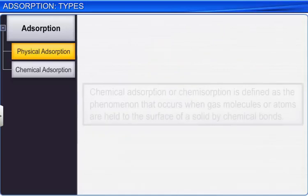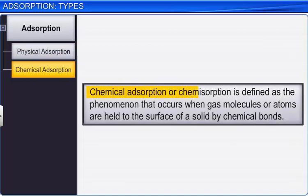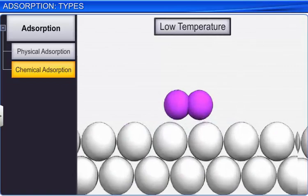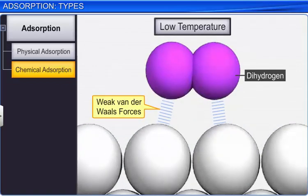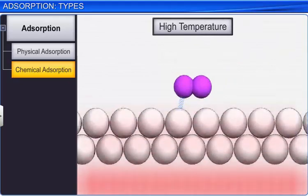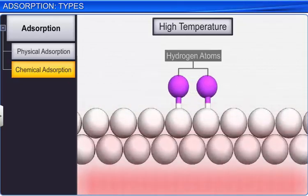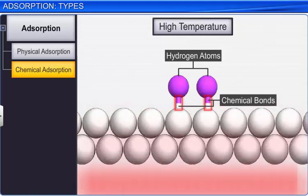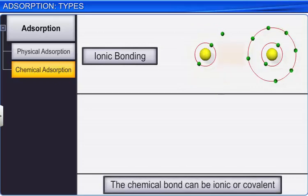Chemical adsorption or chemisorption is defined as the phenomenon that occurs when gas molecules or atoms are held to the surface of a solid by chemical bonds. In the example of dihydrogen and platinum, on increasing the temperature, the adsorbed dihydrogen molecules dissociate into hydrogen atoms, which are held strongly by platinum through chemical bonds. The chemical bond can be ionic or covalent in nature.